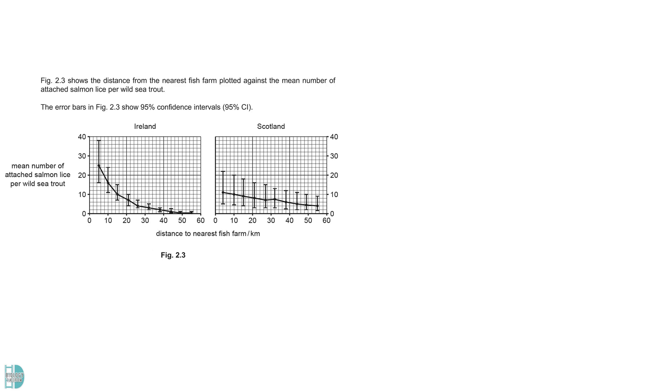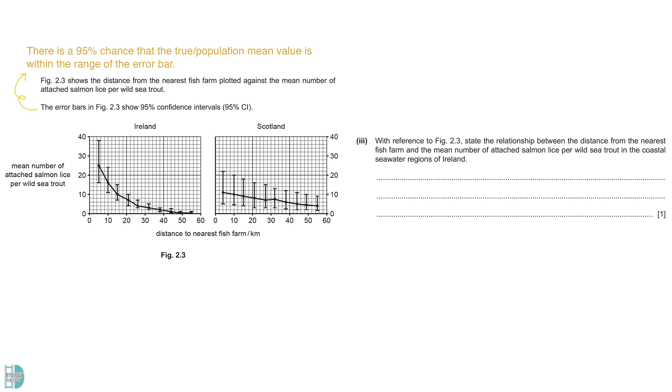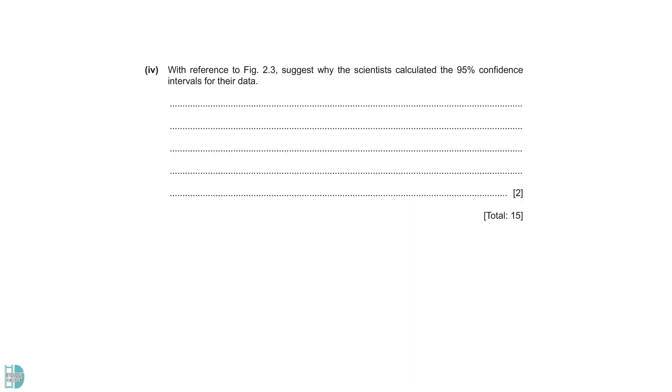Figure 2.3 shows the results. The error bars are included. The error bars show 95% confidence intervals. This means there is a 95% chance that the true or population mean value is within the range of the error bar. Question 3 wants you to state the relationship between the two variables. As the distance increases, the mean number of lice per trout decreases. This is called a negative correlation. Question 4 wants you to suggest why the scientists calculate the 95% confidence interval for their data. As I mentioned just now, the error bars show that there is a 95% probability that the true, actual or population mean lies within this range.